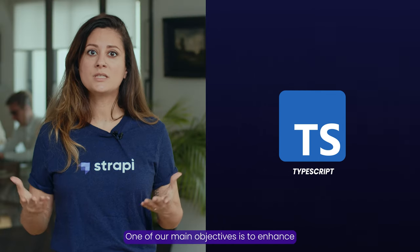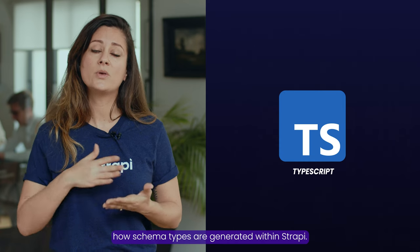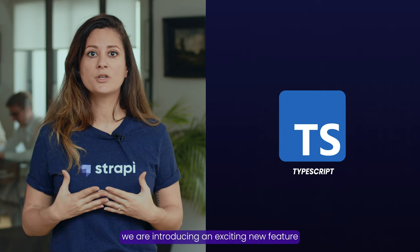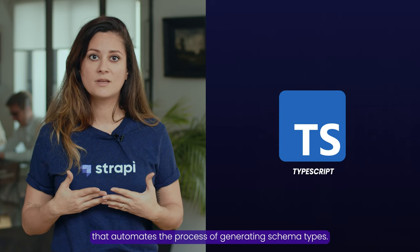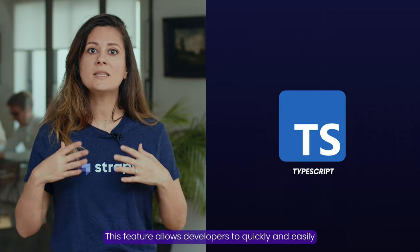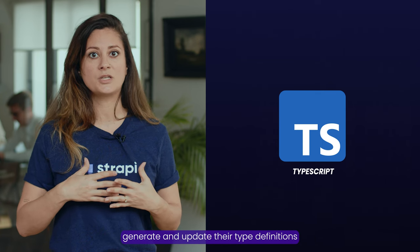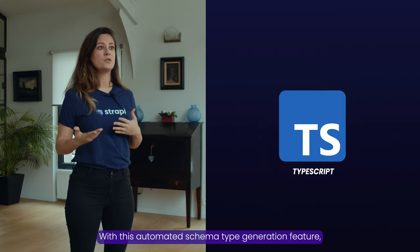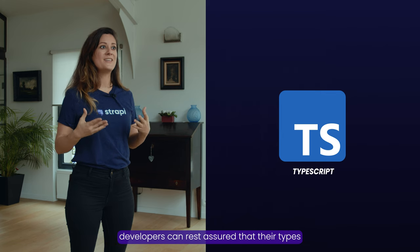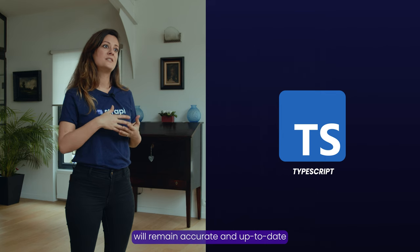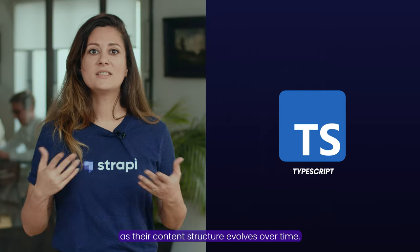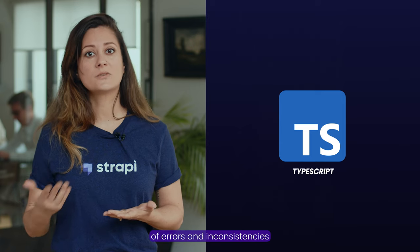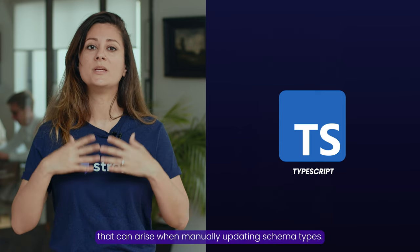One of our main objectives is to enhance how schema types are generated within Strapi. In version 4.11, we are introducing an exciting new feature that automates the process of generating schema types. This feature allows developers to quickly and easily generate and update their type definitions based on their application's code and structure, ensuring that types remain accurate and up-to-date as their content structure evolves over time. This will streamline the development process and reduce the risk of errors from manually updating schema types.